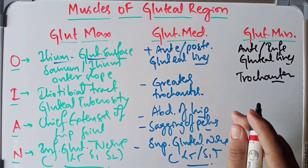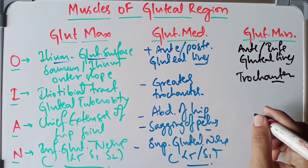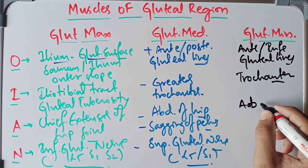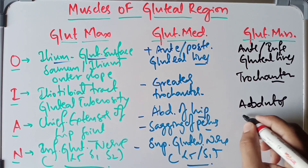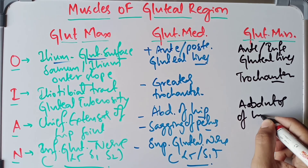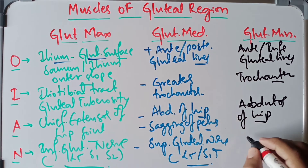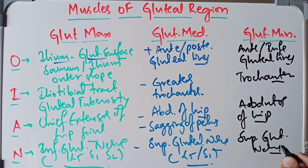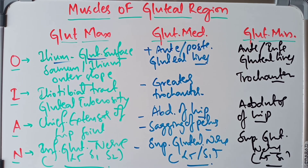The action of the gluteus minimus is abduction of the hip joint. It is also supplied by the superior gluteal nerve, with spinal segments L4 and S1 — the same as the gluteus medius.